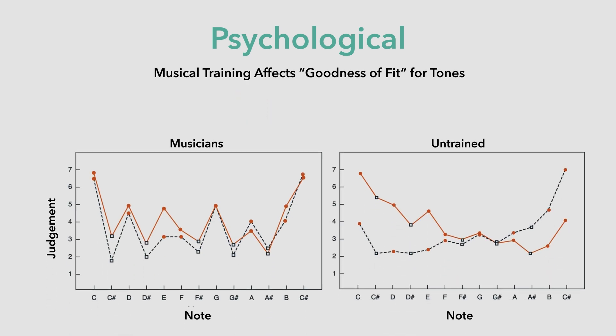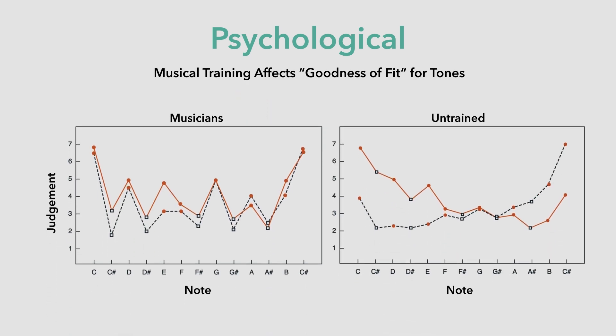Music listeners reference a sense of tonality when judging goodness of fit for individual pitches in a tonal context, and musical knowledge has an impact. Without formal musical training in pitch relationships, listeners tend to regard the distance from the tonic as the mediator of how well a given pitch fits the tonality. For example, the graph on the right shows that non-musicians judged the pitch of G to fit about as well as G sharp does in a C major scale, whereas the musician group on the left recognized that G belonged with C much better than G sharp.